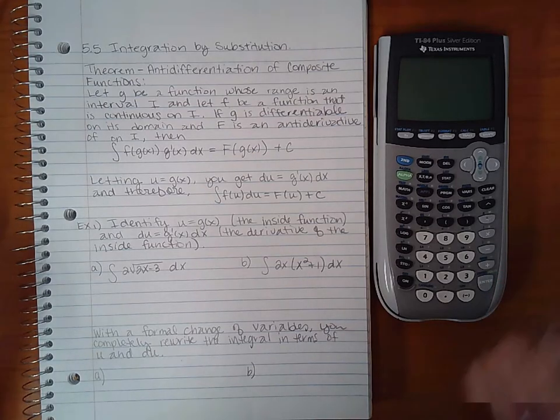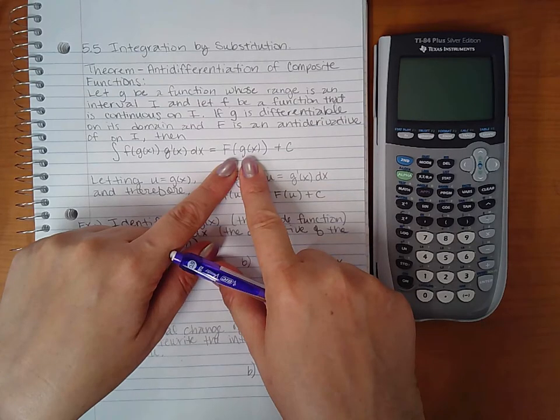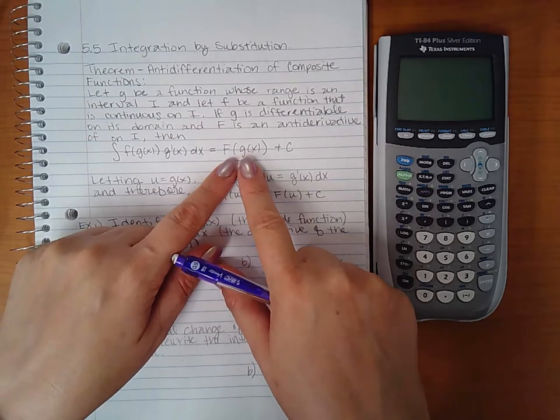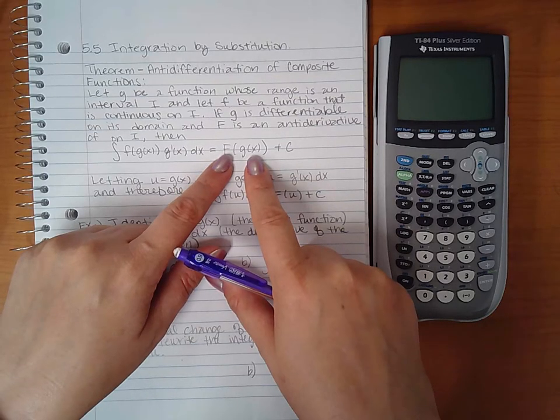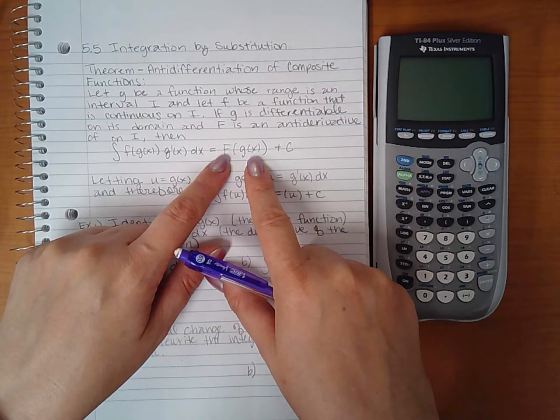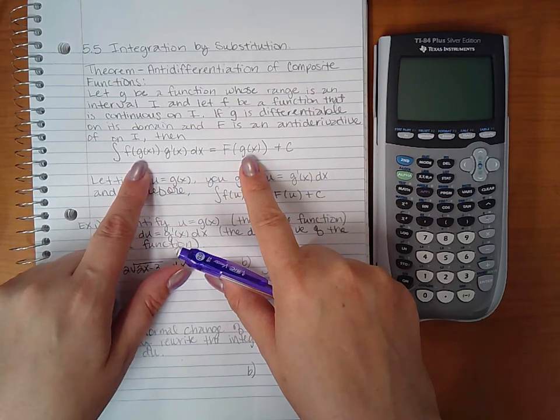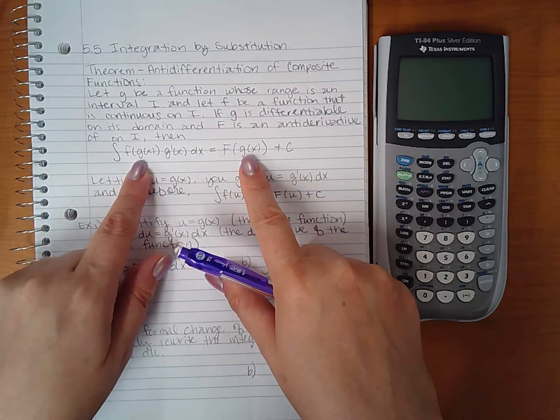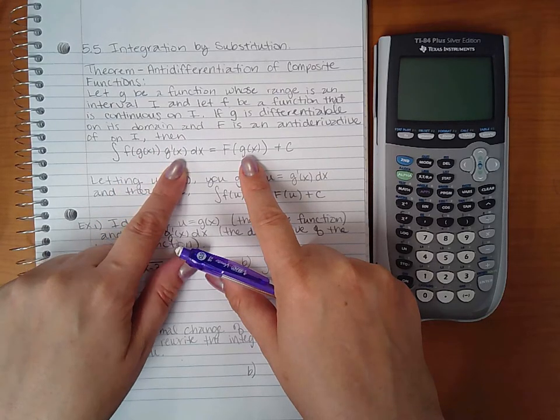Back when we were finding the derivative using chain rule, we said that if you had a composite function where you had an outer function and an inner function, what you did was you took the derivative of the outer function and you left the inner function alone, which is this here. Then the chain rule applied where you had to take the derivative of what was inside, and that's this g prime of x here.